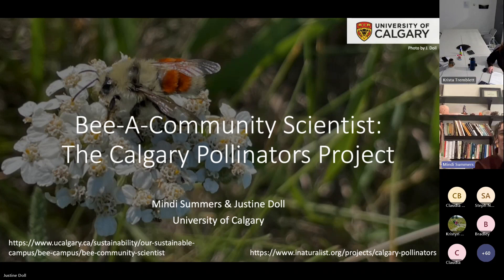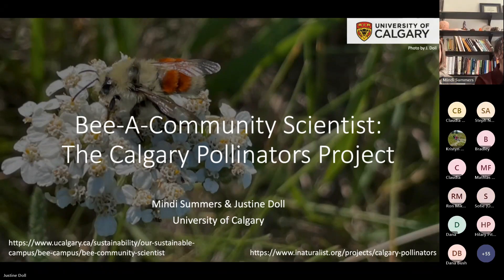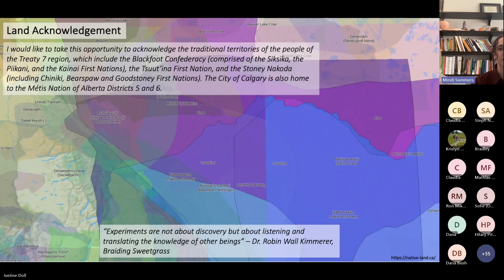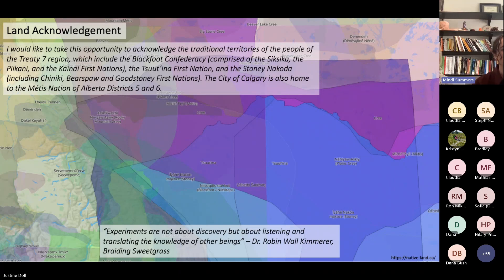Hello and thank you so much for having us today. We're really excited to share with you about the Calgary Pollinators Community Science Project. Mindy and I are both white settlers on this land here, and we want to take a moment to acknowledge the territories we are on. We are presenting today from the traditional territories of the people of the Treaty 7 region, which include the Blackfoot Confederacy — comprised of the Siksika, Bigani, and Gainai First Nations — the Sutina First Nations, the Stoney Nakoda including the Chiniki, Berespa, and Good Stoney First Nations. The City of Calgary is also home to the Métis Nation of Alberta Districts 5 and 6. The traditional Blackfoot name of this place is Malkinstus, which we now call the City of Calgary. The background map is from nativeland.ca — a great app and website to acknowledge the territories wherever you are.